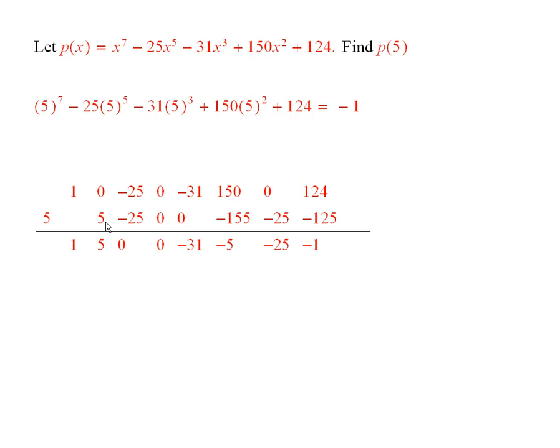Bring down the 1, 1 times 5 is 5, 5 plus 0 is 5, and then I have here, it should be 25, not minus 25. And then we add these together and we get 0, and then we take 5 times 0 is 0, add those we get 0.